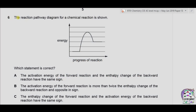Question 6: the reaction pathway diagram for a chemical reaction is shown. On the y-axis we have energy; on the x-axis we have progress of reaction. This is the reactant line and this is the product energy line. Which statement is correct?